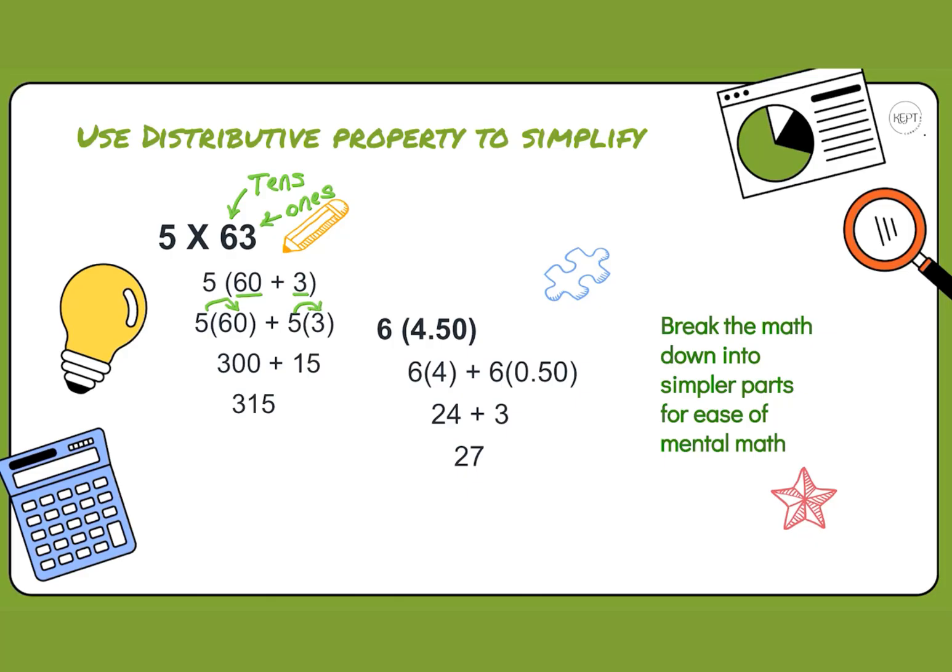The way I like to show distributive property is with arrows, so that's the easiest way to know that I am multiplying these. 5 times 60 is 300. 5 times 3 is 15. Our last operation is to add. When we add those together, we get 315.